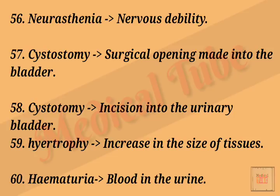Number fifty-seven: cystostomy means surgical opening made into the bladder. Number fifty-eight: cystotomy means incision into the urinary bladder. Number fifty-nine: hypertrophy means increase in the size of tissue. Number sixty: hematuria means blood in the urine.